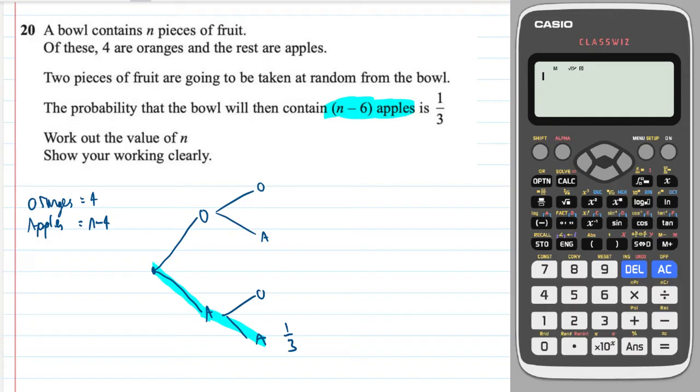Now, what's the chance of you taking an apple in the first instance? Well, there are n minus four of them over a total of n in the bowl.